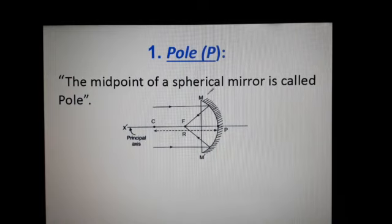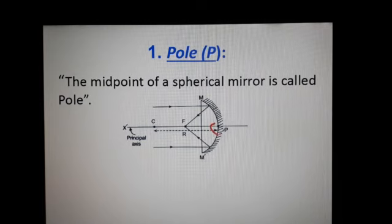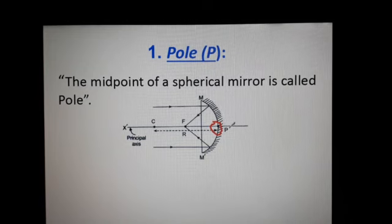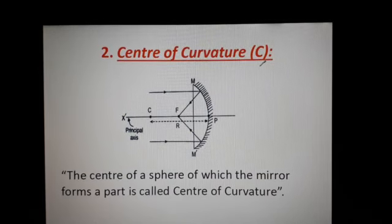So, the pole: the midpoint of a spherical mirror is called the pole. The midpoint of the mirror is called pole. It is denoted by the symbol P. The pole is also called the vertex.